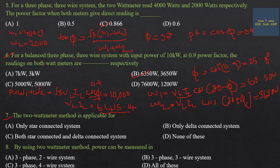Seventh question: The 2-watt meter method is applicable for measuring power in a 3-phase 3-wire system. The 3-watt meter method is used for a 4-wire system. The 2-watt meter method is the standard approach for 3-phase 3-wire systems.